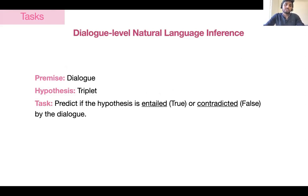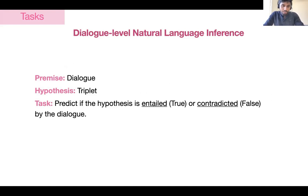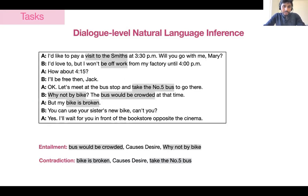The first task is dialogue-level natural language inference, which is the task of determining whether a triplet is true or false given a dialogue. We consider the dialogue as the premise and the triplet as the hypothesis. If the triplet is grounded in the dialogue, then we say it is an entailment; otherwise, it is a contradiction. Here I have shown an example of an entailed triplet and a contradictory triplet annotated from a dialogue. The first triplet is entailed with respect to the dialogue; however, the second one is false given the information in the dialogue, so it is a contradiction.